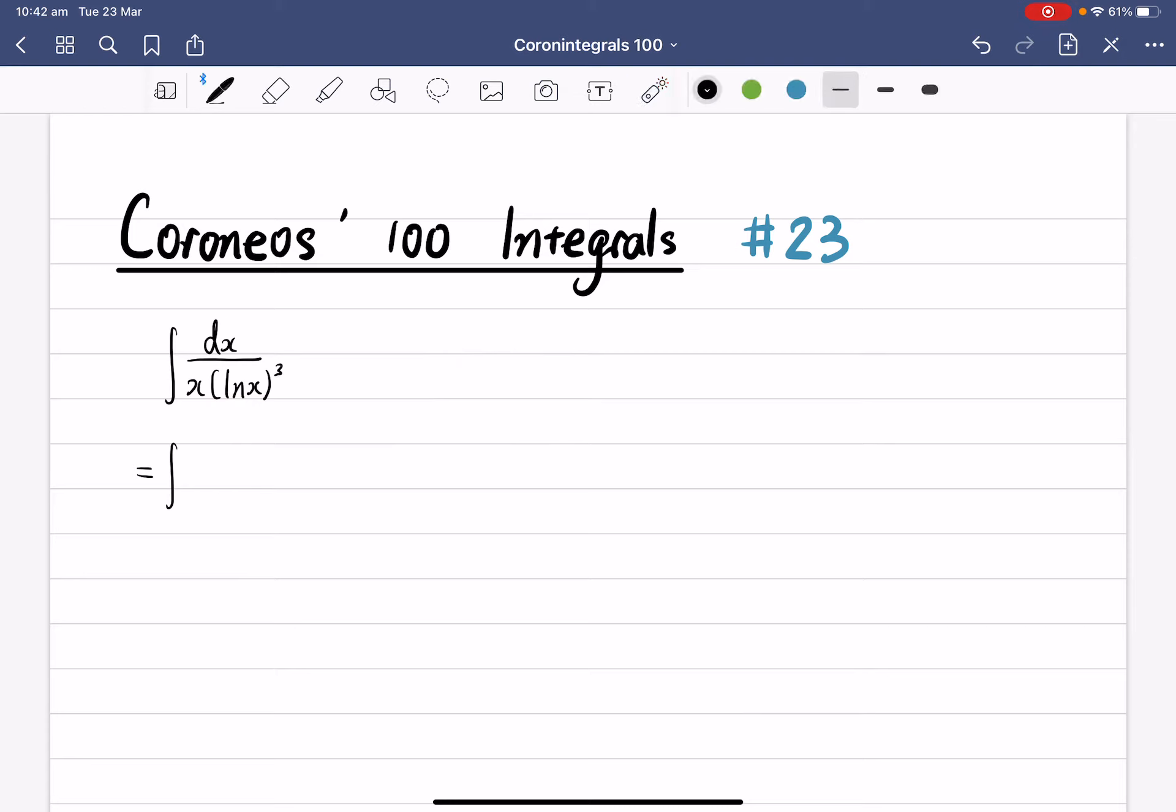All right, so the first step, let's separate the fractions into 1 over x, multiply by lnx to the power of minus 3, and instead of writing a fraction, let's just change it into a negative power dx. So once you finish the steps, now as you can see, we've got the reverse chain rule here.